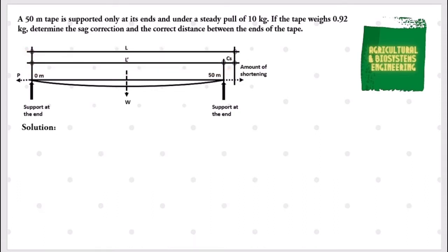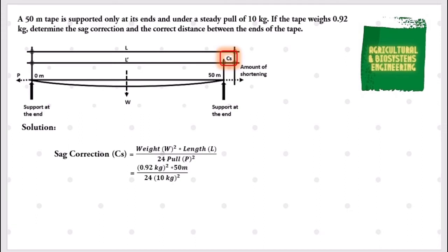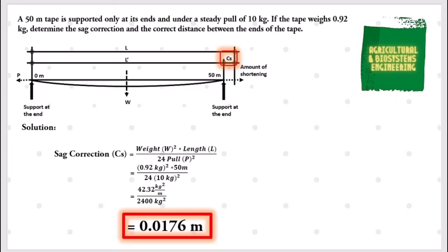We begin solving the value for the sag correction. The formula is: sag correction equals the product of the square of the weight multiplied by the length, all over 24 multiplied by the square of the amount of pull. Substituting the values: (0.92)² multiplied by 50 meters, all over 24 multiplied by (10 kg)², giving us 42.32 kg²·m over 2400 kg². The final answer for the sag correction is 0.0176 meters.